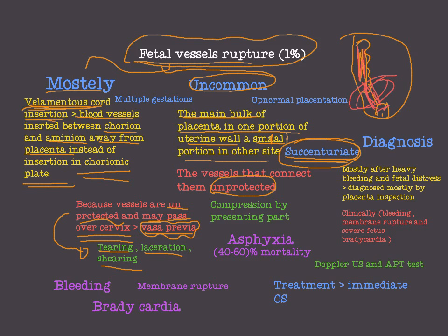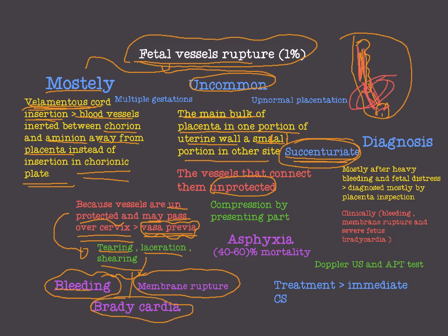Rupturing of these vessels in velamentous cord insertion or succenturiate placenta will lead to bleeding. In vasa previa, the vessels are inserted in the membranes, so injury to these vessels causes membrane rupture, bleeding, and severe fetal bradycardia. In vasa previa, the presenting part of the baby can also compress the blood vessels, leading to asphyxia. Notably, 40–60% of vasa previa cases result in fetal death, making it a very serious problem.